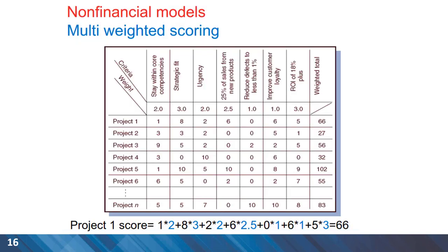Another non-financial model which is probably superior to checklist is multi-weighted scoring. On the top of this table, we have a list of criteria: staying within the core competencies of the organization, strategic fit, urgency, and others. For each criteria, a weight has been assigned. For example, strategic fit has a weight of three, and urgency has a weight of two, and so on for other criteria.